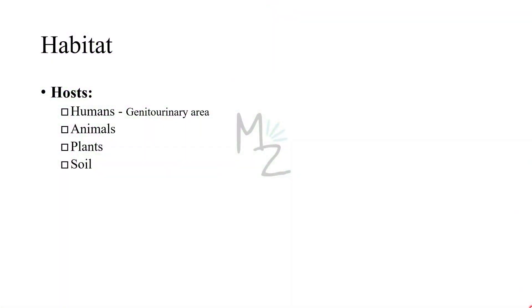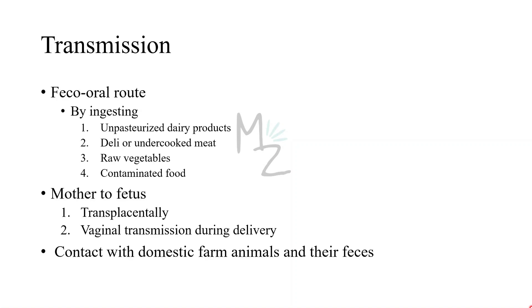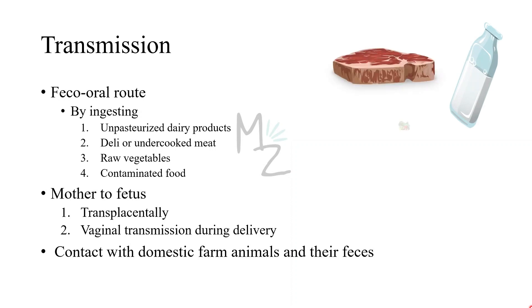Habitat. Hosts: human beings are the hosts, but Listeria can be found specifically in the genitourinary area and, more specifically, in the female genital tract. This organism is distributed worldwide in animals, plants, and soil. From these reservoirs, it is transmitted to humans by the feco-oral route, primarily by ingesting unpasteurized dairy products like milk, undercooked or deli meats, raw vegetables, and contaminated food.